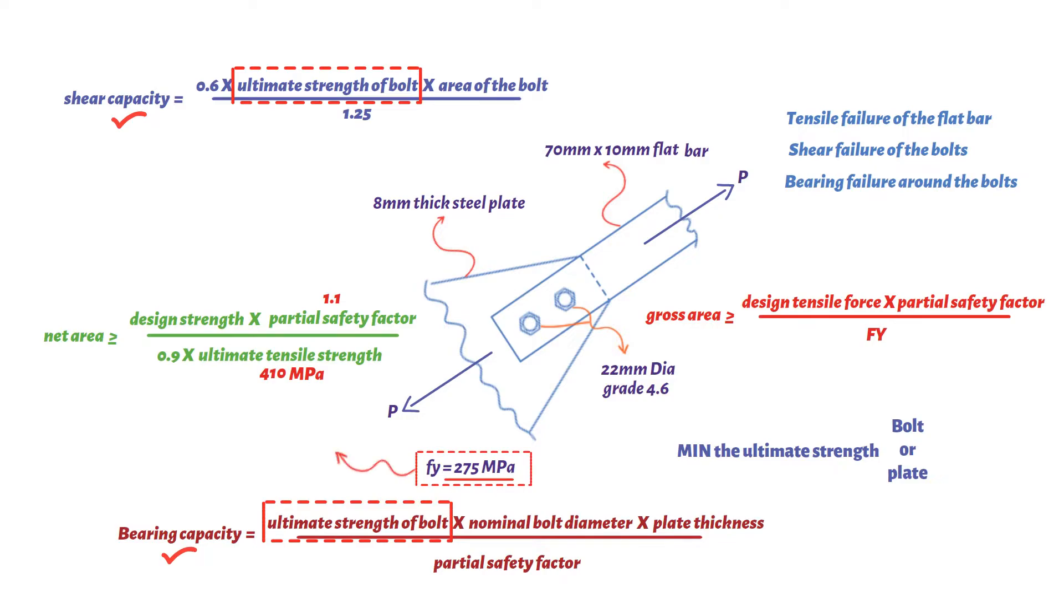S275 steel has an ultimate strength of 410 newton per square millimeters, so for grade 4.6 bolts, the ultimate strength of 400 newton per square millimeter limits.